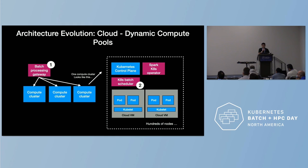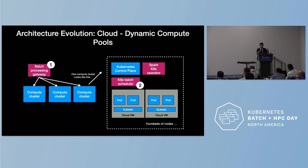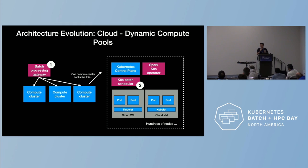To solve these challenges, we evolved our architecture to be more cloud-native by leveraging what we call dynamic compute pools. Dynamic compute pools is really nothing more than splitting the giant compute cluster into many smaller clusters — clusters that we are comfortable managing, comfortable knowing they will run just fine, and that give us less overhead.